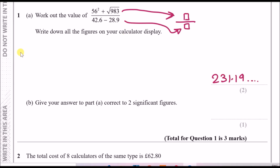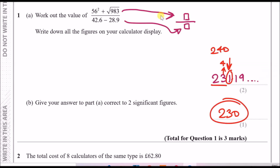For part b, give your answer to part a correct to two significant figures. We care about the first two digits — the 2 and the 3. We then look at the third digit: because 1 is less than 5 we round down, so 231 becomes 230. If it had been 5 or more, the 3 would round up to 4, giving 240.